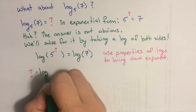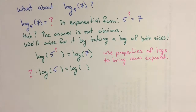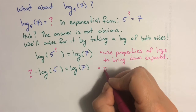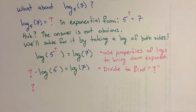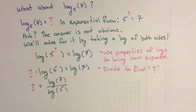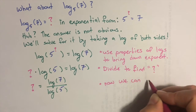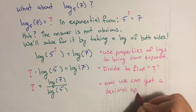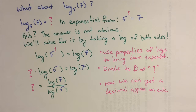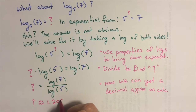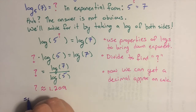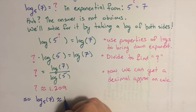So now I have: what times log of 5 equals log of 7. Divide by log of 5 and we'll get our question mark by itself. This is an exact answer — log of 7 over log of 5 — but probably we would like a nice decimal approximation, which we can find using the calculator. So this tells me that log base 5 of 7 is about 1.209.